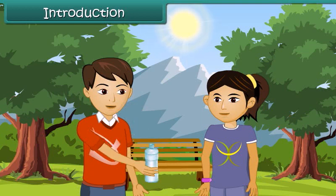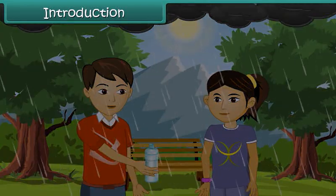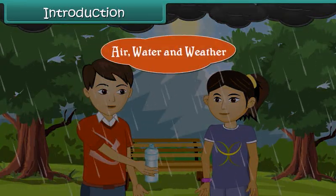Today there is no air around. You are right. Today is very humid. It is reported in the morning news that today's weather will be humid and it may rain. Children, in this lesson we will learn about air, water and weather.